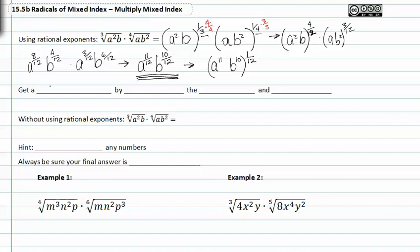Here are the rules: get a common index by multiplying the index and exponents accordingly.